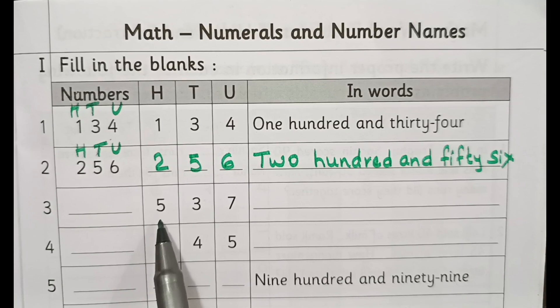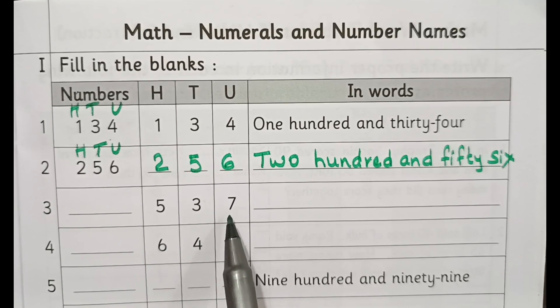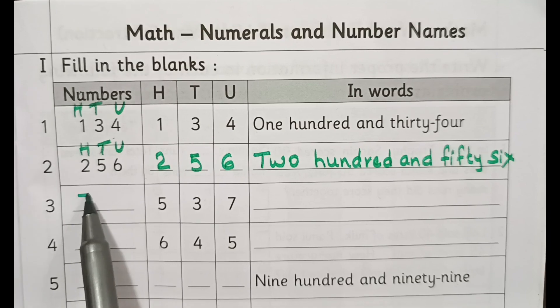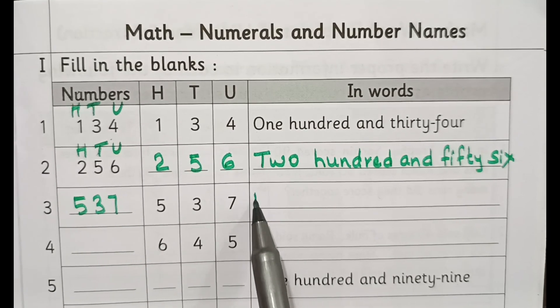Five hundreds, three tens and seven units. That will become five hundred and thirty-seven. Write the spelling, five hundred and thirty-seven.